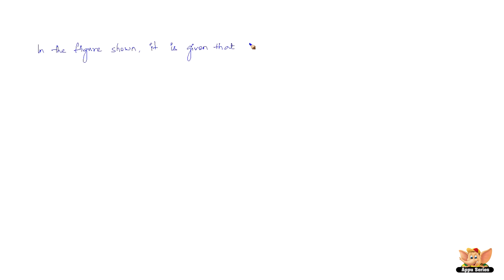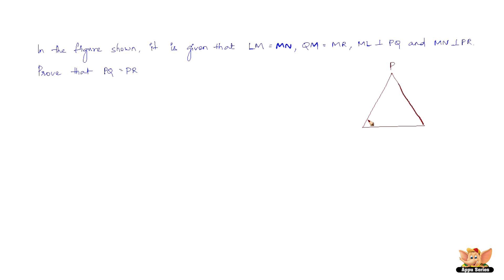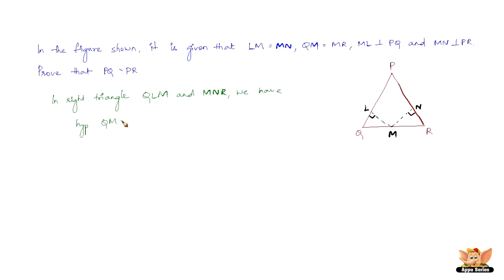Let us quickly solve another problem. In the given figure, LM equals MN, QM equals MR, ML is perpendicular to PQ, and MN is perpendicular to PR. We need to prove that PQ equals PR.